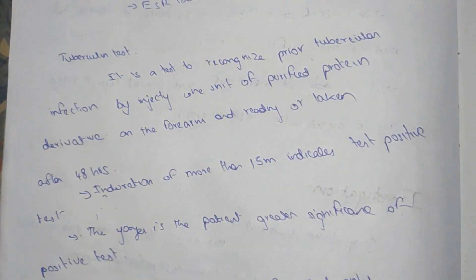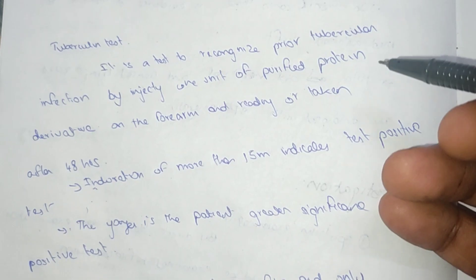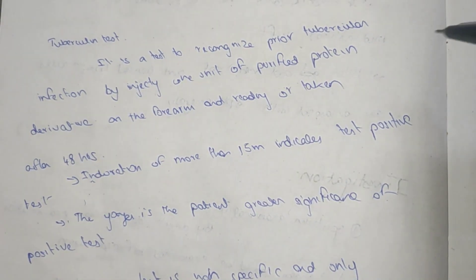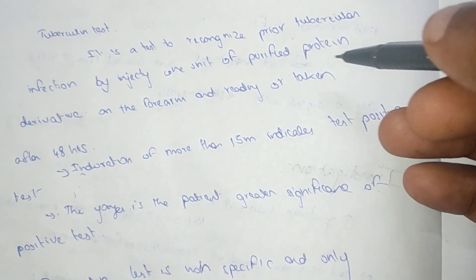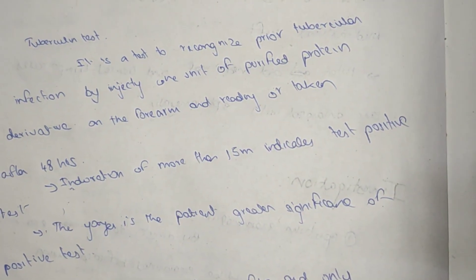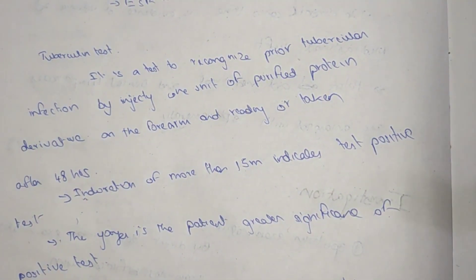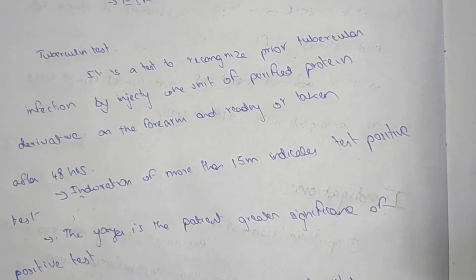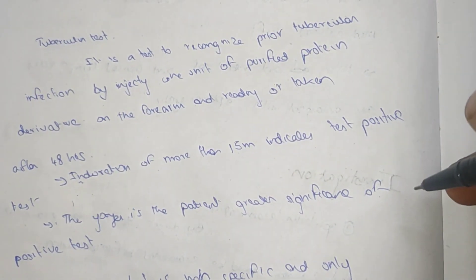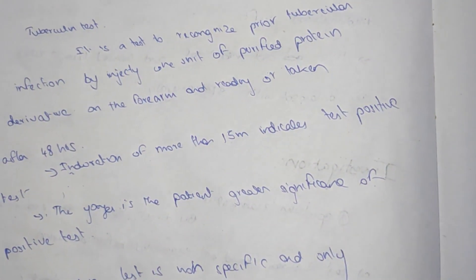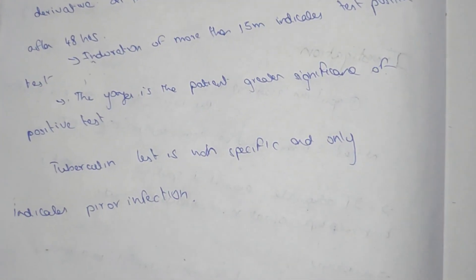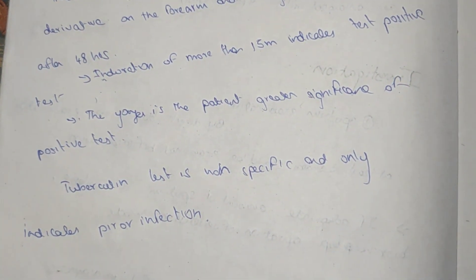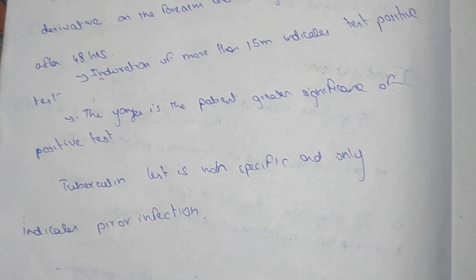Tuberculin test: the most standard test for tuberculosis. It is a recognition of prior tuberculosis infection by injecting one unit of purified protein derivative in the forearm. After 48 hours, if there is an induration of 15mm or more, the test is positive. Less than that is negative. Tuberculin test is not specific and only indicates prior infection.